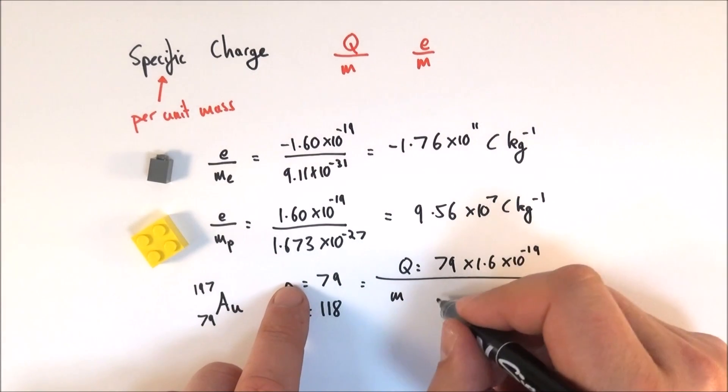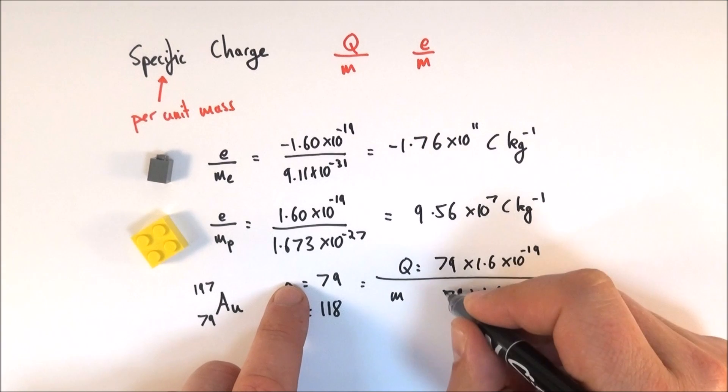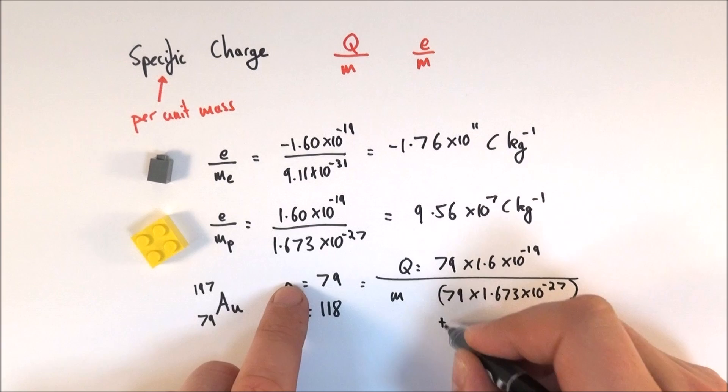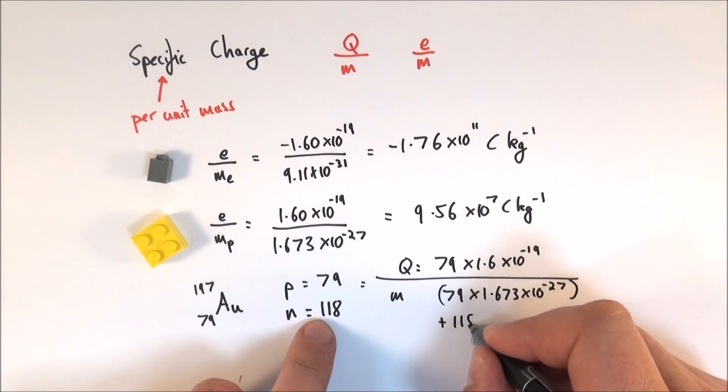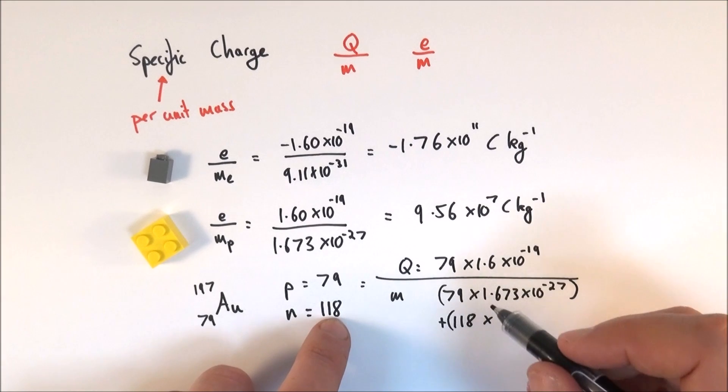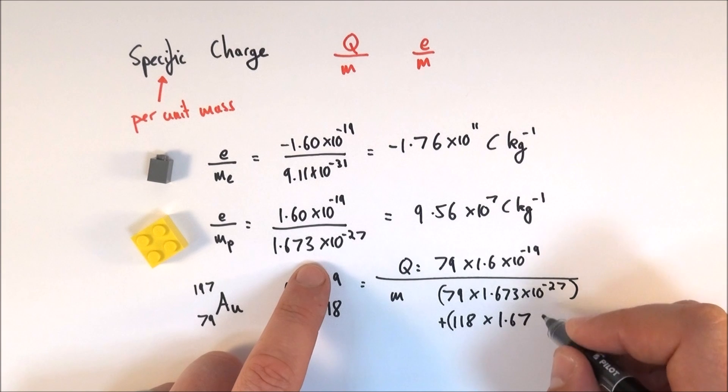The total mass is going to be equal to the mass of all the protons, which is 79 times 1.673 times 10 to the minus 27, added to the total number of neutrons 118, but this time the mass of a neutron is slightly different to the mass of a proton, especially when working to four significant figures. So this is 1.675 times 10 to the minus 27.